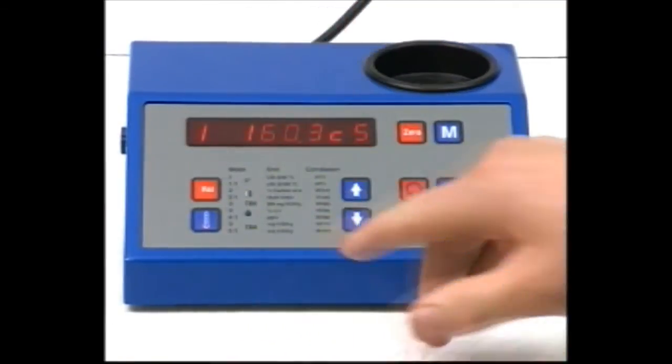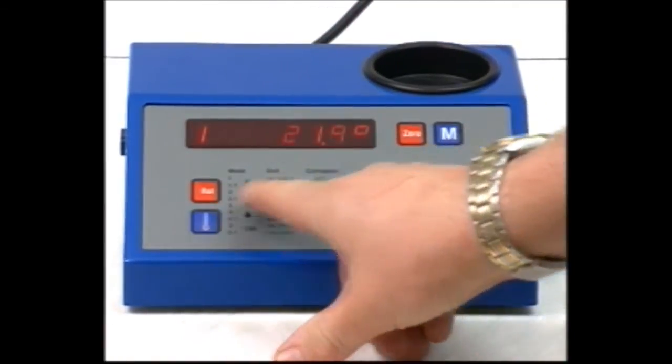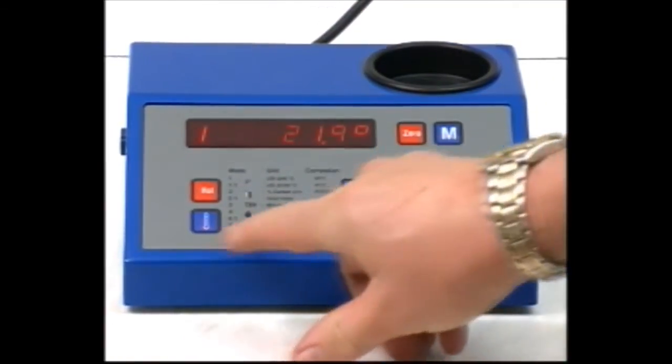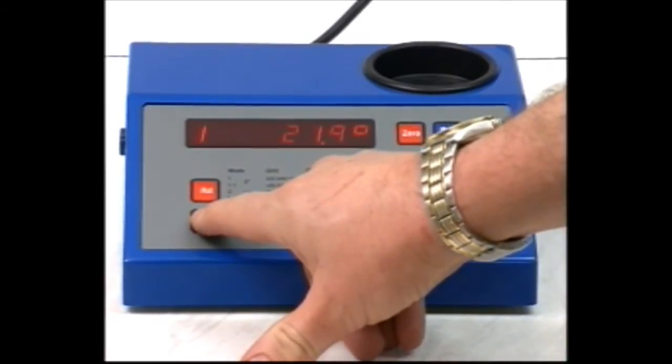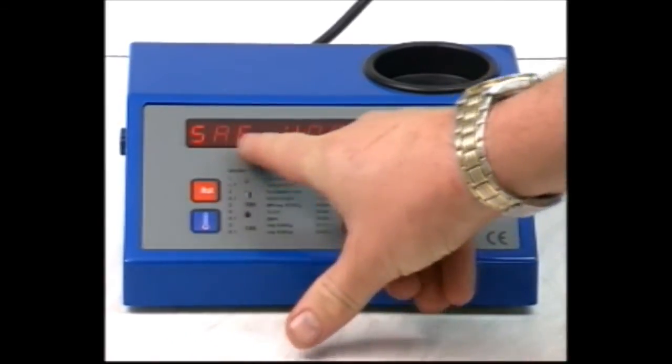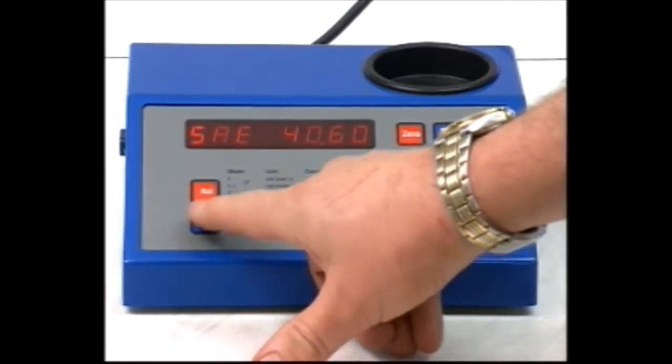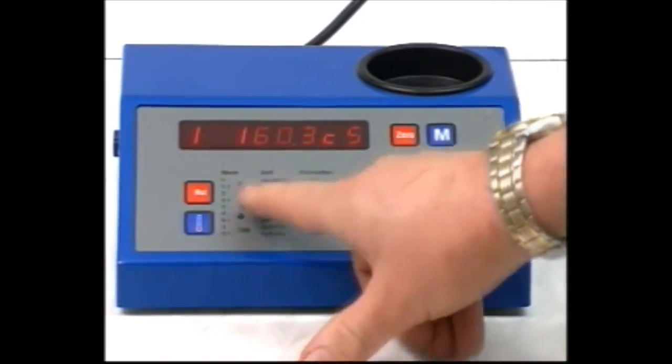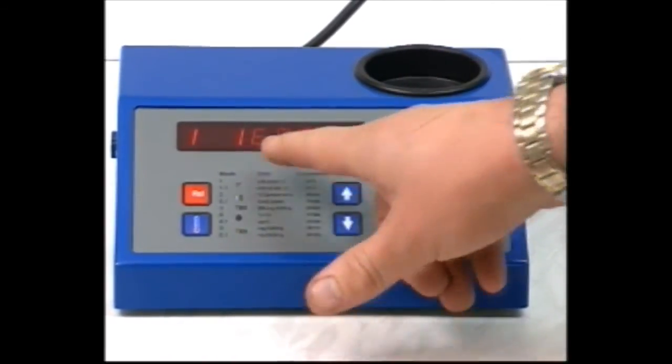If you press the temperature button once after a test, the oil sample temperature is displayed. Press it twice and it displays the SAE range. Press it a third time to return to Centistokes.